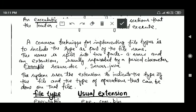A common technique for implementing file types is to include the type as a part of the file name. In this case, the name is split into two parts, a name and an extension, usually separated by a period character.